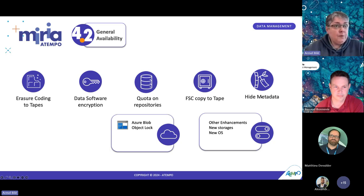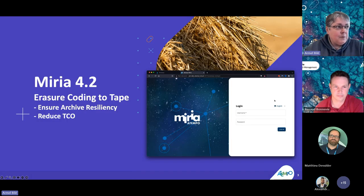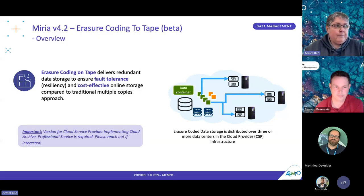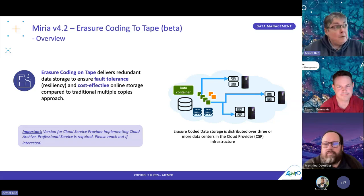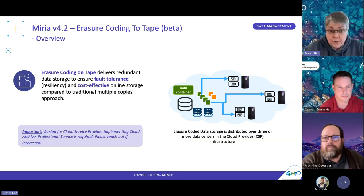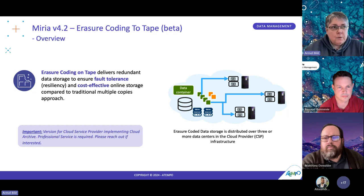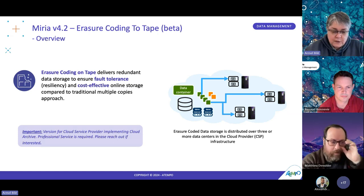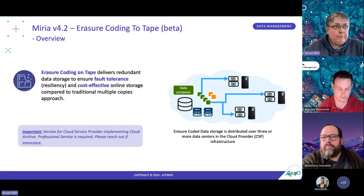So without further ado, let's move forward with the first feature. We are going to talk about erasure coding to tape. Before I give the floor to Mathieu, I'm going to describe a little the background for this feature. We developed this RAID-type storage management over tape to address some requests from a cloud storage provider wanting to implement cold storage services, similar to Glacier, to be able to archive data on a very resilient and very compact storage.